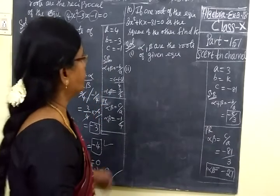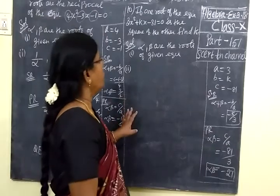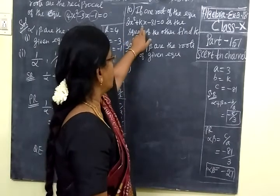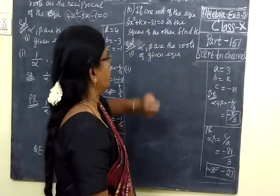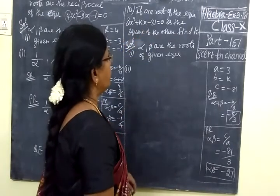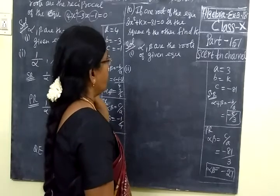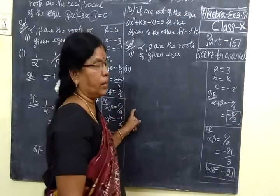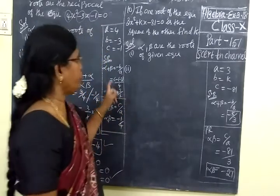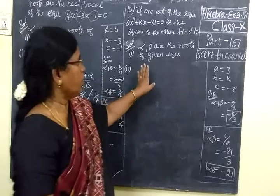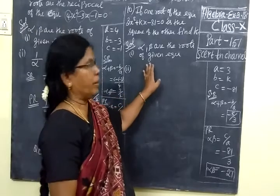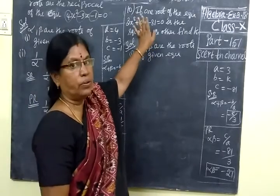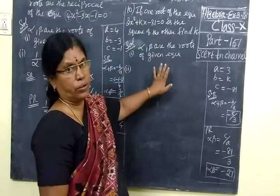Next is the 10th sum. If one root of the equation 3x squared plus kx minus 81 equal to 0 is the square of the other, find k.